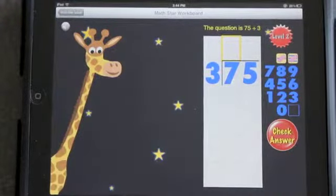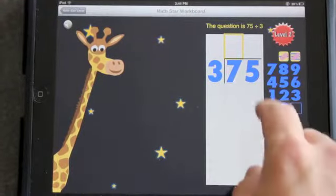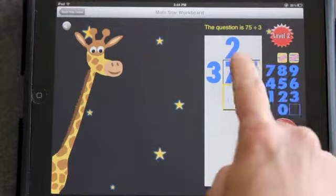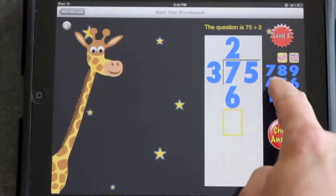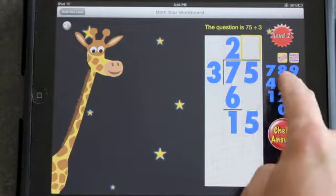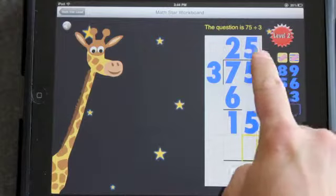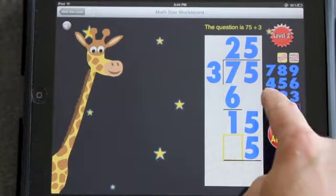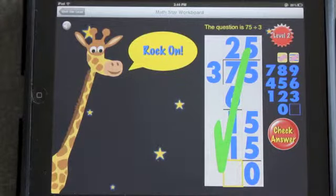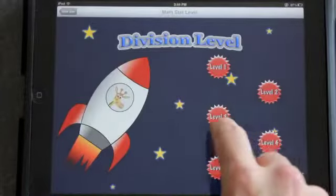So let's go to level 2. Level 2, the dividend is now 2 digits. So 3 into 7 is 2. 2 times 3 is 6. 7 minus 6 is 1. Bring down the 5. 3 goes into 15 5 times, so 5 times 3 is 15. And 15 minus 15 is 0. Rock on, dude! So that's level 2.